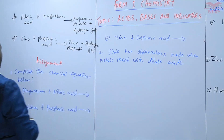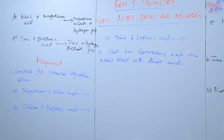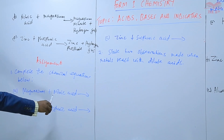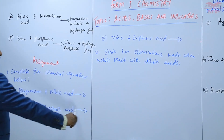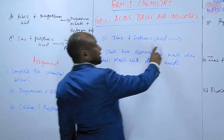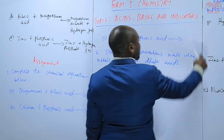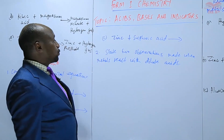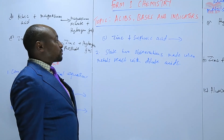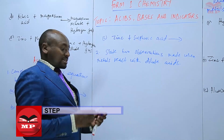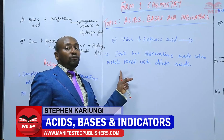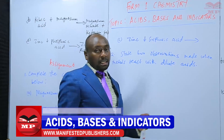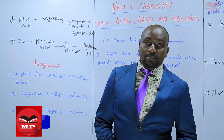For the assignment: first, complete the chemical equations — magnesium plus nitric acid, calcium plus phosphoric acid, and zinc plus sulfuric acid. Second, state two observations made when metals react with dilute acids. We'll stop there until next time. Goodbye.